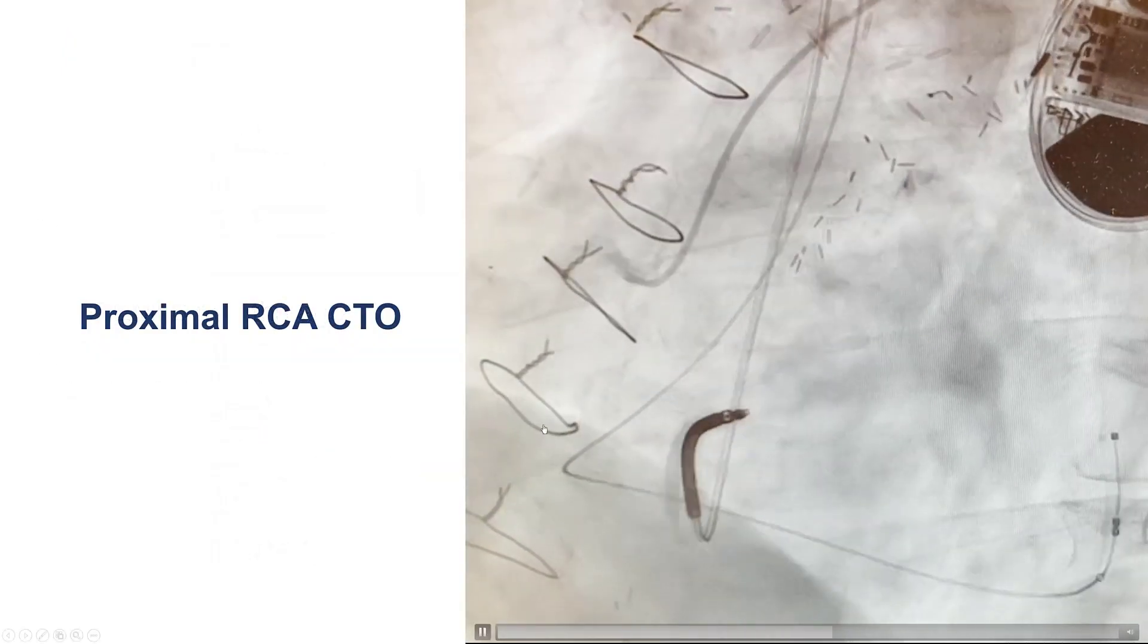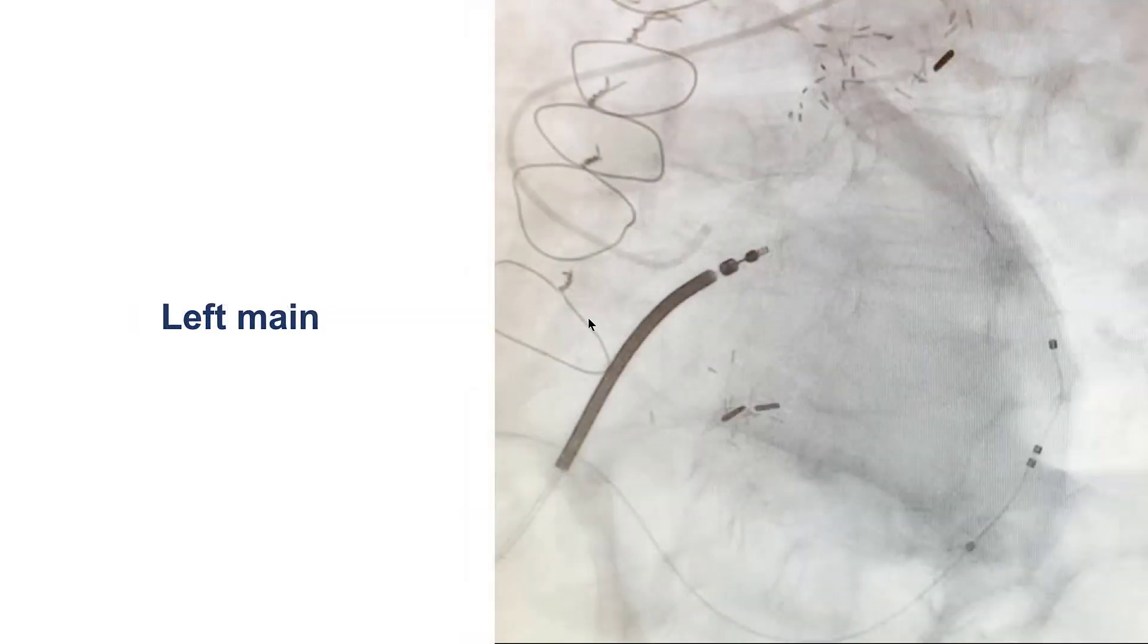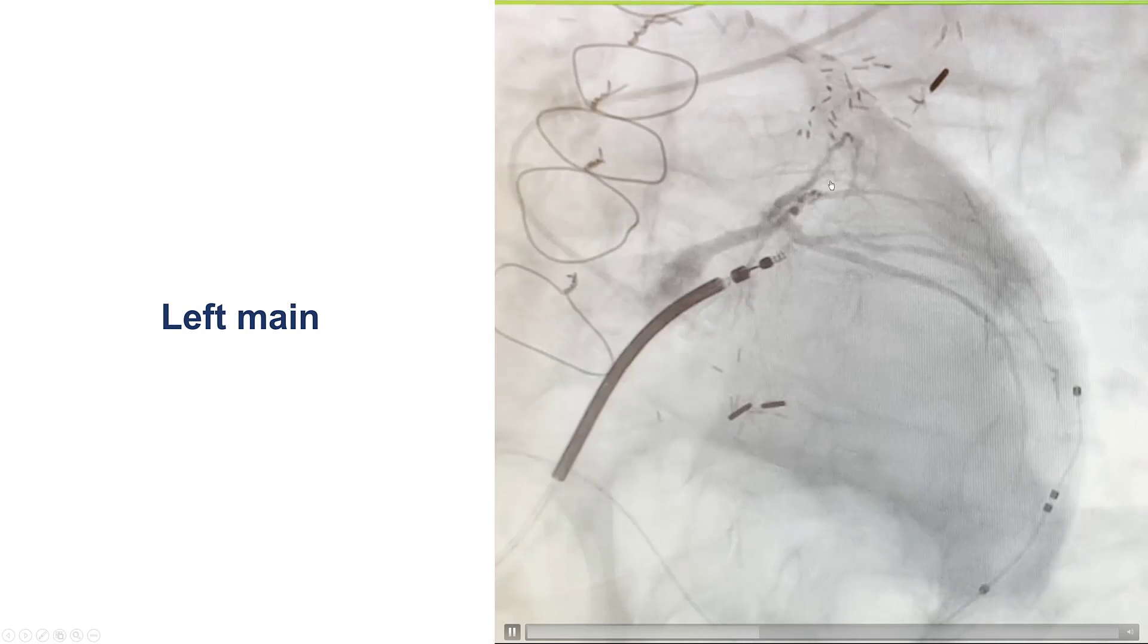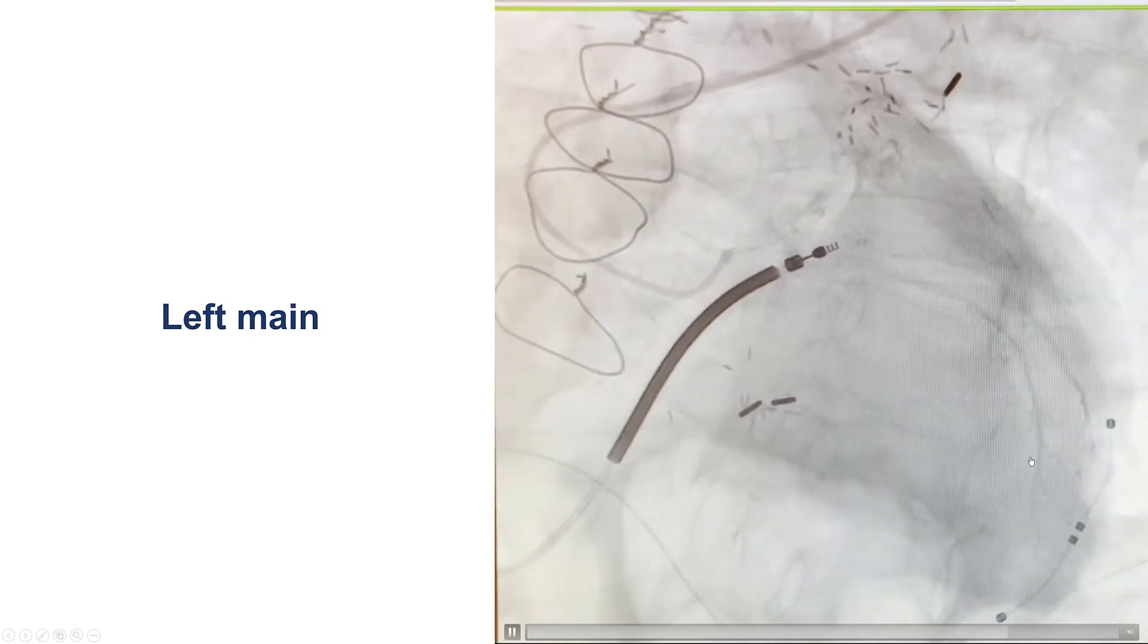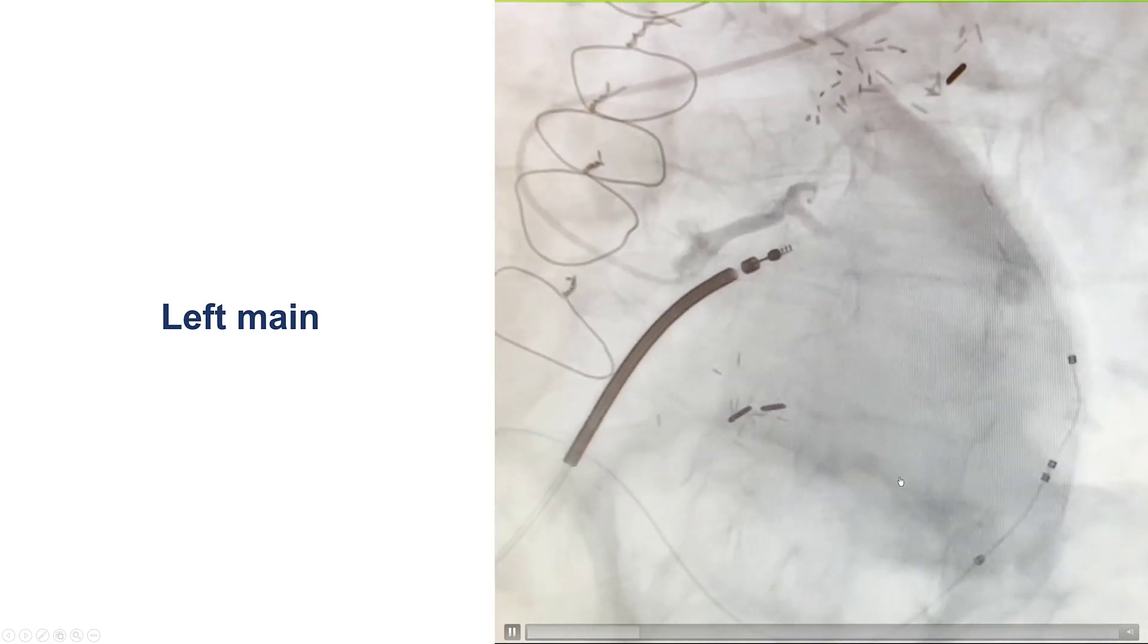This is a diagnostic coronary angiogram that shows a CTO of the proximal right coronary artery with a small branch coming at the tip. The left system was diffusely diseased. There was flow into the circumflex.